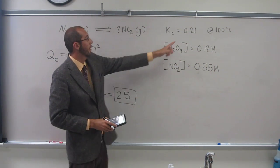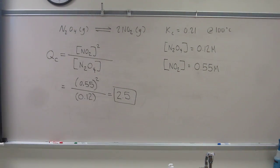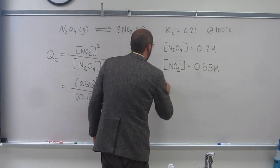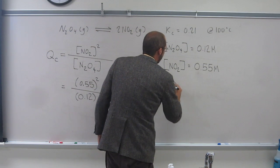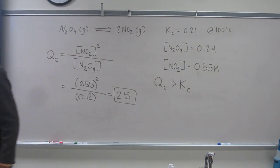Is that equivalent to 0.21, 2.5? No, clearly not. So it's bigger than K, right? OK, so let's write that down. So QC is greater than KC. Does that make sense, everyone? QC is greater than KC.